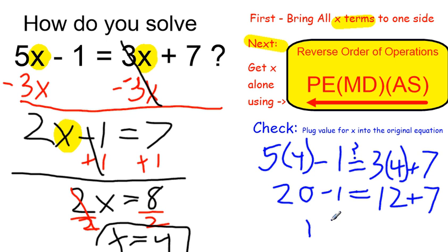20 minus 1 is 19, and 12 plus 7 is also 19. So it does check out, and the value of 4 makes the original equation true. So I've confirmed my answer, x equals 4 is correct.